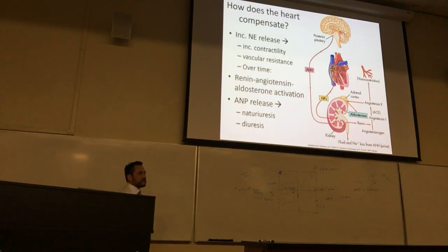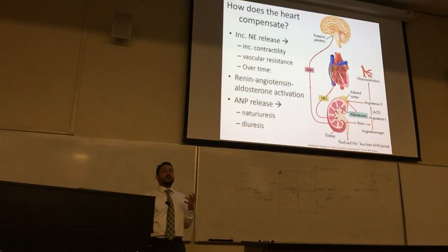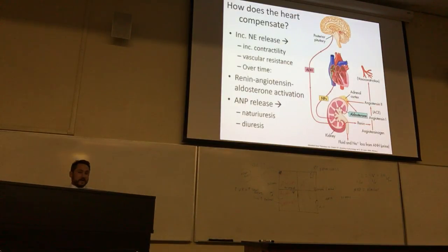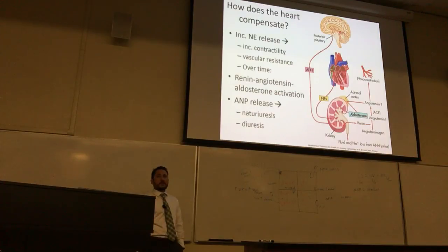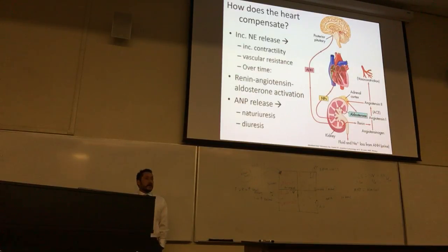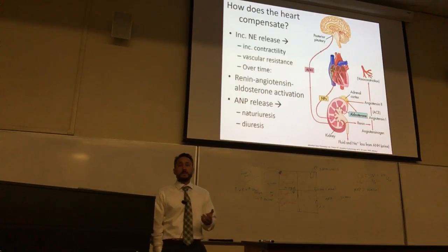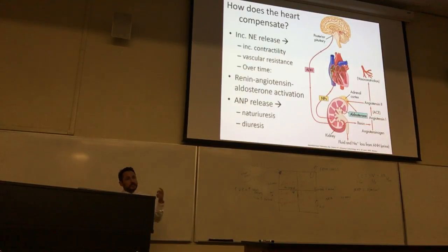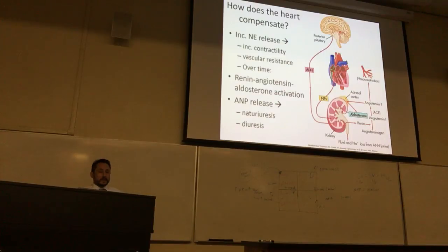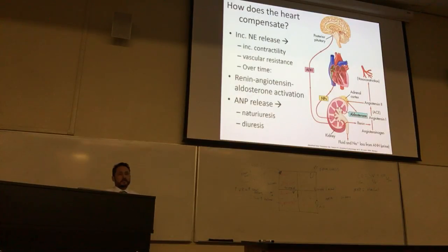The heart can try to compensate, and it does so through three mechanisms. The first mechanism — which happens really fast — is the release of a catecholamine known as norepinephrine. Norepinephrine, also called noradrenaline, is used as a neurotransmitter in the nervous system but also as a catecholamine to upregulate sympathetic activity.